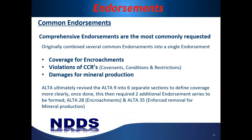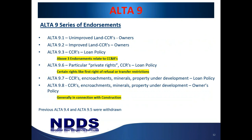Comprehensive endorsements are the most commonly requested. Originally, ALTA 9 combined several endorsements into one, covering encroachments, violations of covenants, conditions or restrictions, and damages for mineral production. ALTA ultimately revised the ALTA 9 into six separate sections to define coverage more clearly. This then required two additional endorsements: ALTA 28, which addresses encroachments, and ALTA 35 for enforced removal for mineral production.